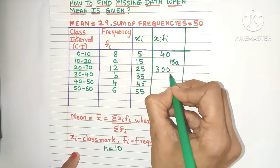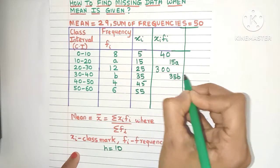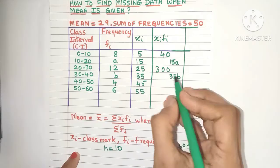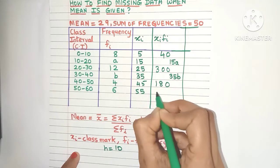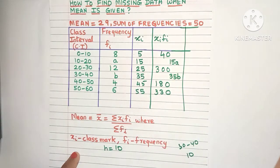35 into b is 35b. Write it to the side. 45 into 4 gives 180. This is 330, and that's it.